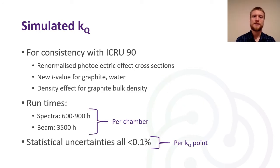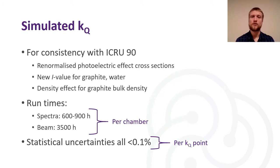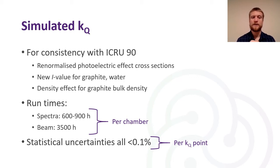For consistency with ICRU report 90, we modelled the re-normalised photoelectric effect cross-sections, used the new mean excitation energy values for graphite and water, and used the density effect for graphite at bulk density rather than the density it appears in the chambers. The runtimes for the tabulated spectra were on the order of 600 to 900 hours per chamber combined across all energies, and for the BEAMnrc LINAC models they were closer to 3,500 hours per chamber. Statistical uncertainties for each submitted point were less than 0.1% per KQ point.